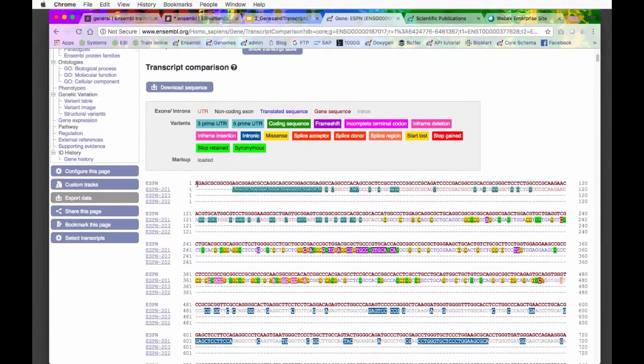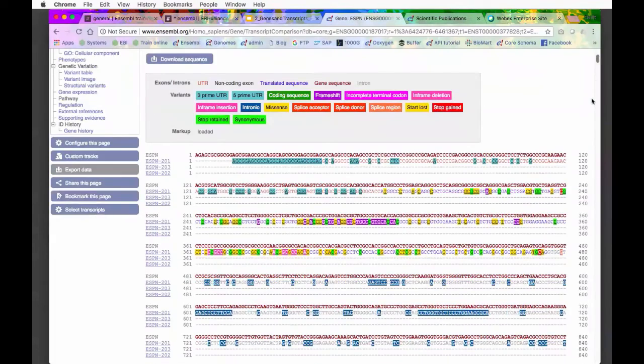We've got the sequence of ESPN along the top. Then we have three rows, each of our three transcripts that we've selected. We can see that the first one is transcribed from right near the very beginning. We're in orange, which is its untranslated region. Then we go into blue, which is the translated sequence. Then down here it goes grey, which is our intron.